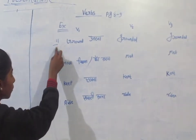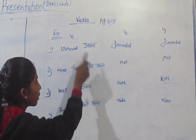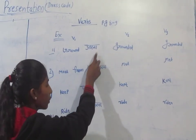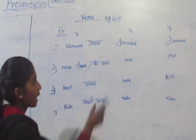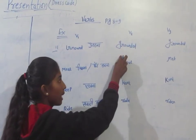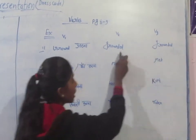The first example is 'ground.' This is why it is used as a base form. The second form is 'grounded,' and the third form is also 'grounded.'